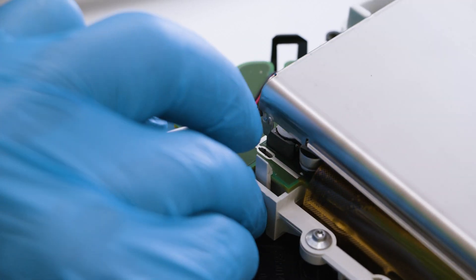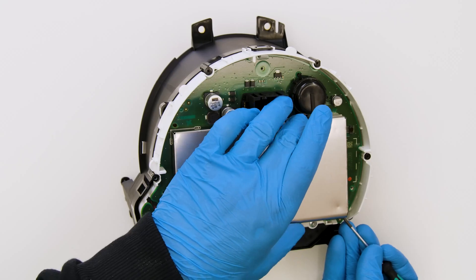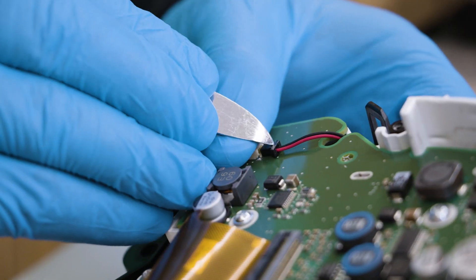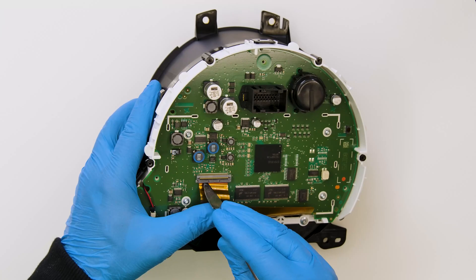Take off the metal shielding as well. Using the spudger undo the display power supply connector and the FPC.